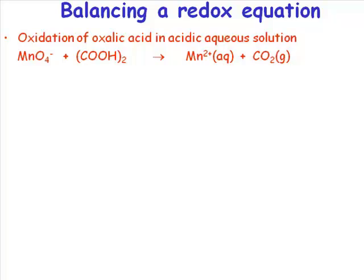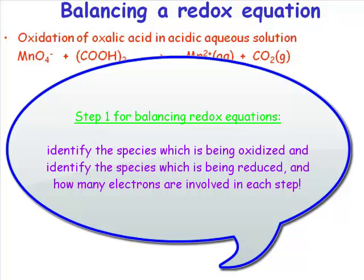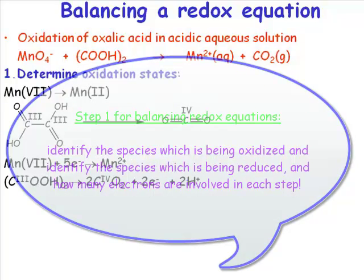What we need to do is recognize that. The first step in balancing a redox equation is to recognize what species is being oxidized, how many electrons are involved in that step, and which species is being reduced, and how many electrons are involved in that step.